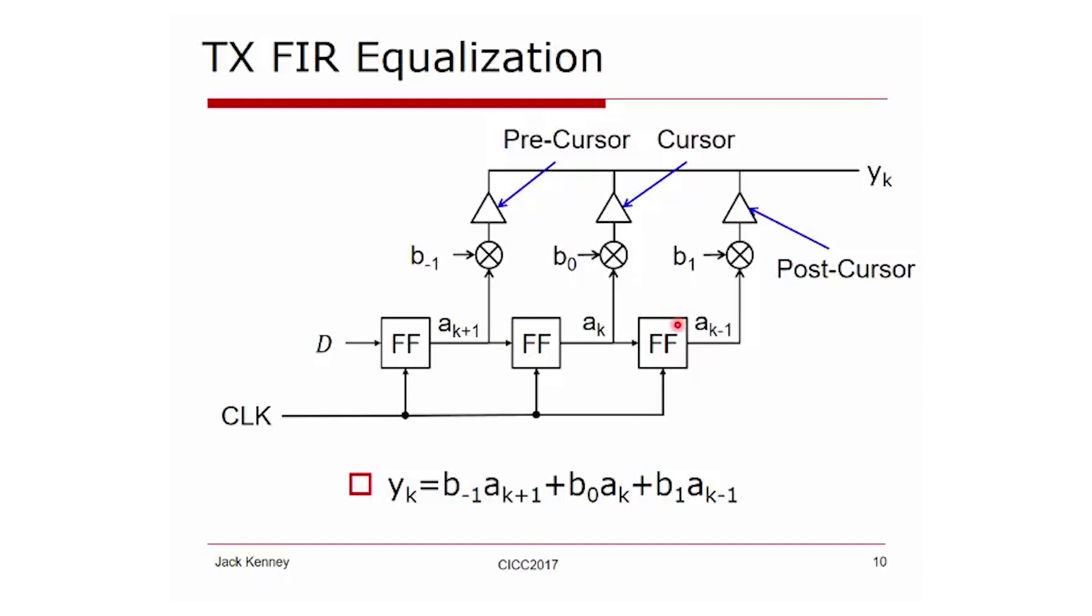The advantage of putting the FIR on the transmitter is that delays are flip-flops. If you were to put this at the end of the link, you would now have a signal rich in analog voltage. You would have to start implementing either track and holds or analog delay lines, and the system becomes quite a bit more complicated.